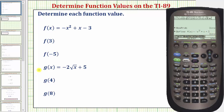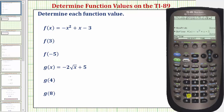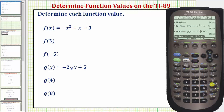Let's also define the function g of x. Notice there's a g above the seven, so we press alpha seven for g, then parenthesis x equals negative two, the square root is second multiply, x close parenthesis, plus five, and enter. And now we can determine the function values.